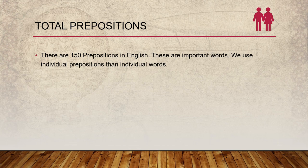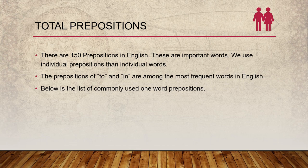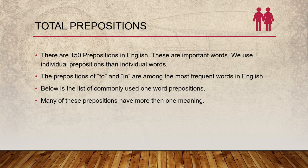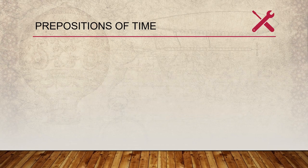Total prepositions: there are 150 prepositions in English. These are important words we use. Prepositions like 'to' and 'in' are among the most frequent words in English. Below is a list of commonly used one-word prepositions. Many of these prepositions have more than one meaning, all explained in detail with examples in the following slides.